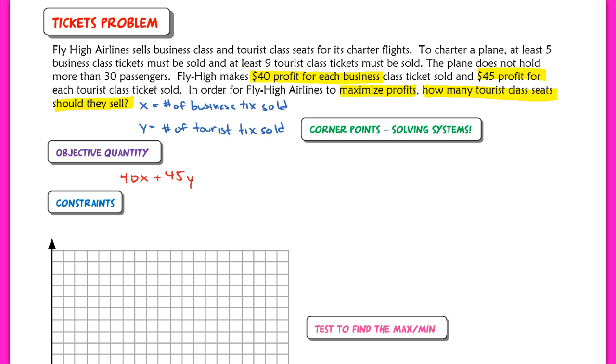Which means our objective quantity should be 40X plus 45Y. And it's not an equation necessarily. I mean, you can write equals profit, but we don't know what that quantity is. So I can't set it equal to something specific.